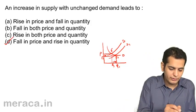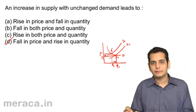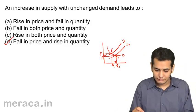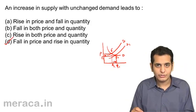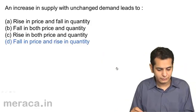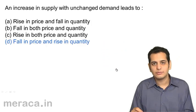So what has happened? Quantity has increased from q to q1, price has fallen from p2 to p1. So we can say that the price falls and the quantity increases — the answer is d. Let's check. That's the answer.